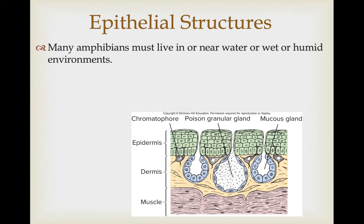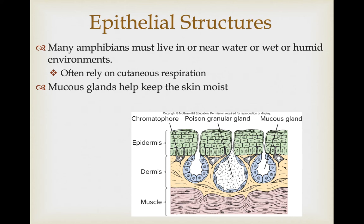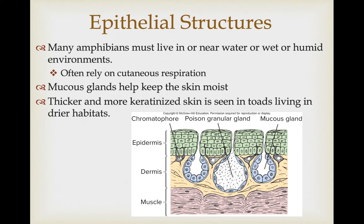Many amphibians must live in or near water or wet humid environments — that's why they're called amphibians. They can live in terrestrial environments, but they also have to be in water for some part of their life. Often this is due to the fact that they rely on cutaneous respiration, and their skin has mucus glands that help keep their skin moist so it can maintain functioning respiration. Toads tend to live in drier habitats and have thicker, more keratinized skin to keep themselves from drying out, but they also use lungs rather than skin for respiration.